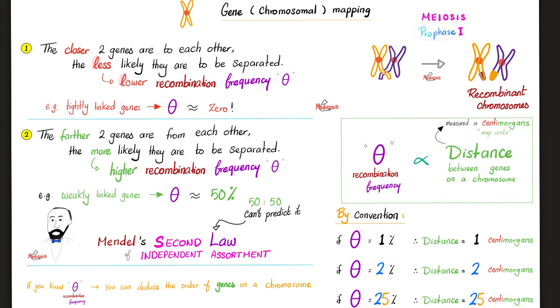What if the theta is two percent? Then the distance is two centimorgans. What if it's three percent? Three centimorgans. What if it's twenty-five percent? Twenty-five centimorgans. Fifty percent? Fifty centimorgans. Therefore, if you know the theta, you can deduce the distance between two genes on a chromosome, which can help you deduce the order of genes on chromosomes.